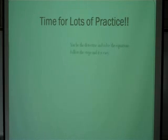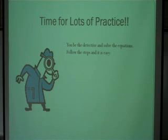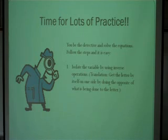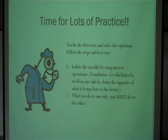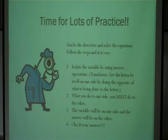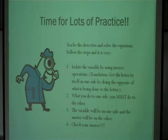Now it's time for lots of practice. You're going to be the detective and solve the equations — follow the steps and it's easy. Step one: isolate the variable by using the inverse operation — get the letter by itself on one side by doing the opposite of what's being done to it. What you do to one side, you must do to the other, because of the properties of equality. The variable will be on one side, the answer on the other. Always check your answer using substitution. This concludes our lesson on solving equations with whole numbers.